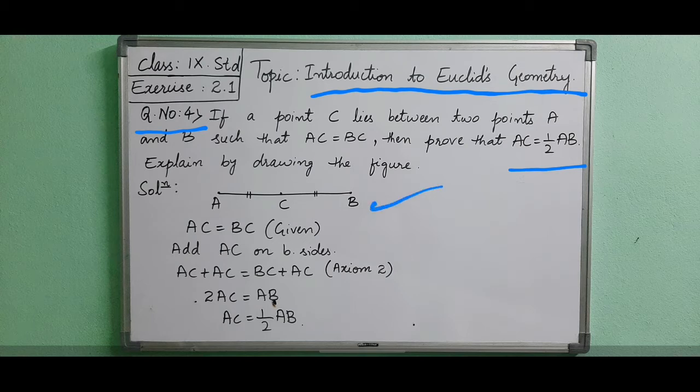AB is a line and in between you have a point C such that AC and BC are equal. So, we will see here what is given: AC is equal to BC.